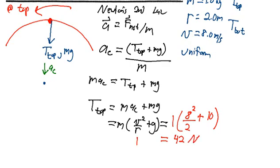So the tension at the top of the orbit that the string exerts on the ball is equal to forty-two newtons. Alright, so we want to do a similar thing for the bottom.